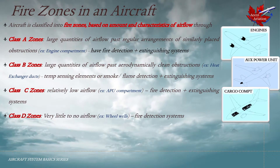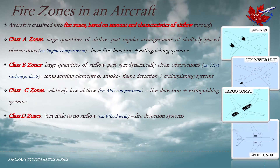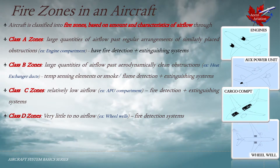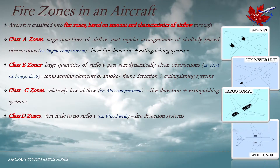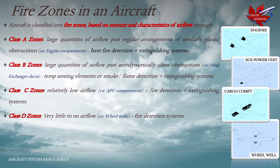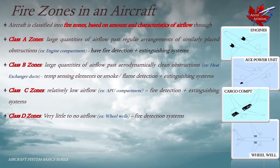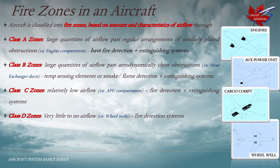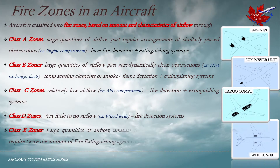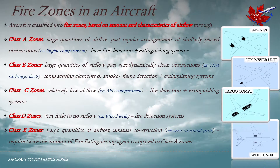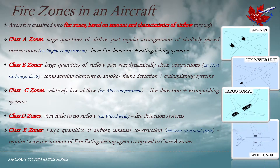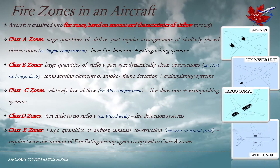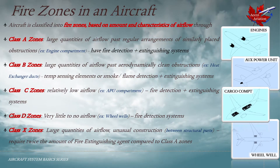Class D zones have very little to no air flow — the wheel well area is an example. The lack of air makes a fire extinguishing system non-existent as a fire would self-extinguish once it consumes the atmosphere. However, a fire detection system is still required so that the crew is alerted to the damage. For example, if a fire occurs in the wheel well and the wheels are damaged, the detection system alerts the crew so they can prepare for landing and avoid further hazards. Class X zones have large quantities of air flow between unusual construction areas between large structural paths, and the fire extinguishing agent required would be twice the amount compared to Class A zones.